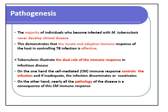Pathogenesis: the majority of individuals who become infected with Mycobacterium tuberculosis never develop clinical disease, demonstrating that the innate and adaptive immune responses of the host are effective in controlling tuberculosis infection. Tuberculosis illustrates the dual role of the immune response in infectious disease: on one hand, cell-mediated immunity controls the infection; if inadequate, the infection disseminates or reactivates. On the other hand, nearly all the pathology of the disease is a consequence of this cell-mediated immune response.